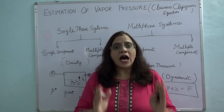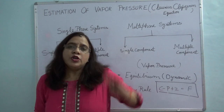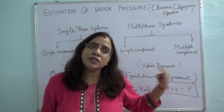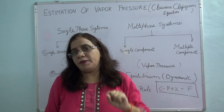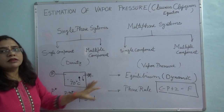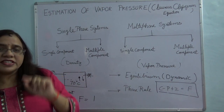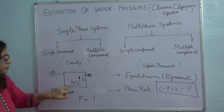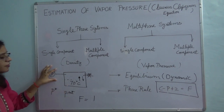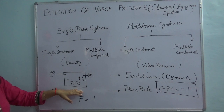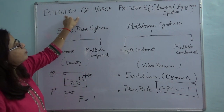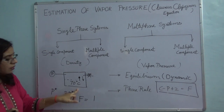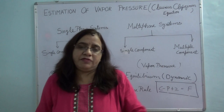Now all the properties can be calculated using that one value. This gives you an idea that there must be some additional thermodynamic relations which we have to bring into picture in order to calculate all the other properties of the system. Since degree of freedom is 1, if I specify temperature I can calculate pressure, or vice versa. That is why the topic of this lecture is estimation of vapor pressure, that is P* or P-sat. There are various equations and relations available for this.